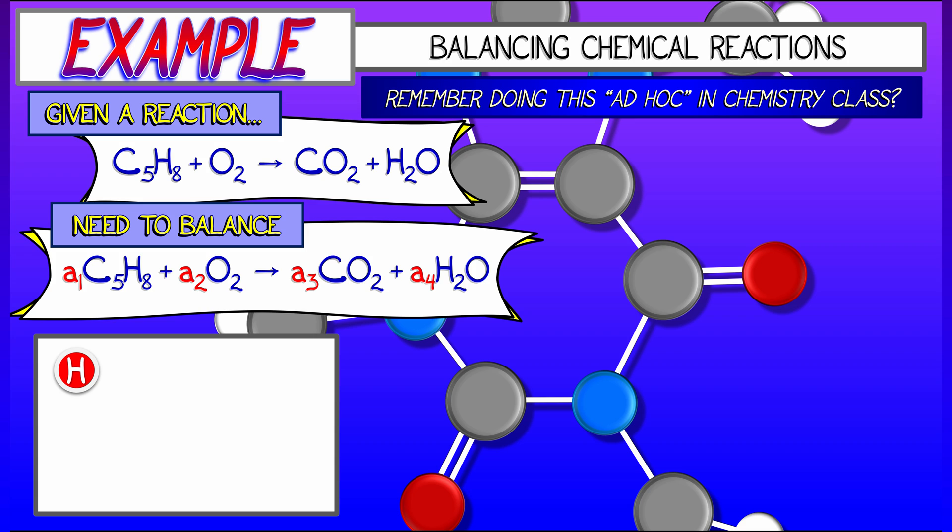And then what we do is atom by atom, we balance the left-hand side with the right-hand side. So if we take the hydrogen atoms, on the left we have 8 times A1, and on the right we have 2 times A4, and to balance we need to set those equal to each other. We could do the same for carbon.